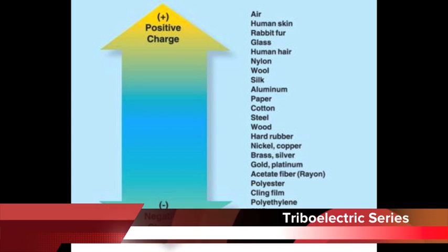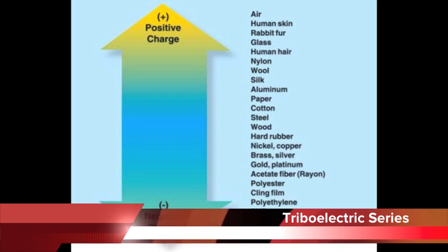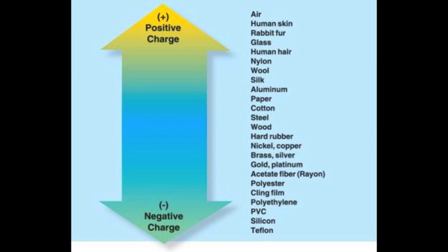Triboelectric series: materials are often listed in order of polarity of charge separation when they are touched with another object. A material towards the bottom of a series, when touched to a material near the top of a series, will attain a more negative charge. The further away two materials are from each other on the series, the greater the charge transfer. Materials near to each other on the series may not exchange any charge, and this depends on the presence of rubbing, contaminants, oxides, or other material properties.